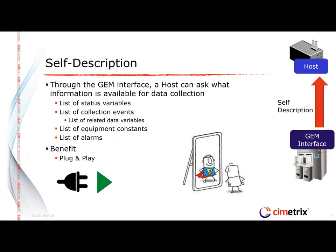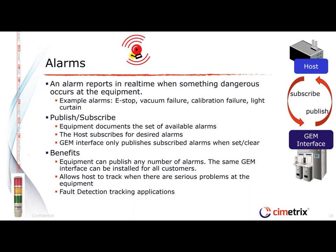There's also some self-description functionality in a GEM interface, where through the GEM interface the host system can ask for a list of collection events that are available, status variables, data available with the collection events, as well as equipment constants and alarms. Those are all published through the GEM interface to facilitate plug-and-play applications.